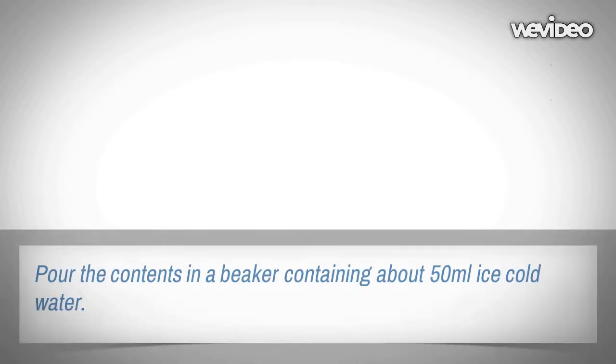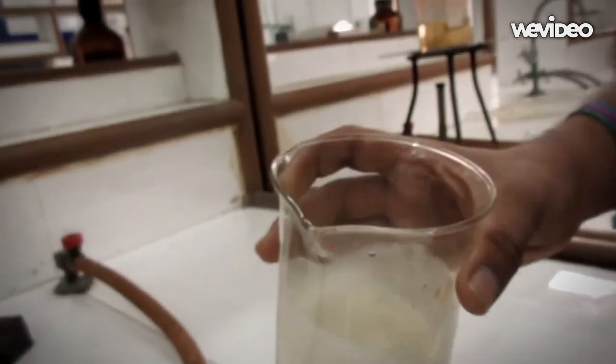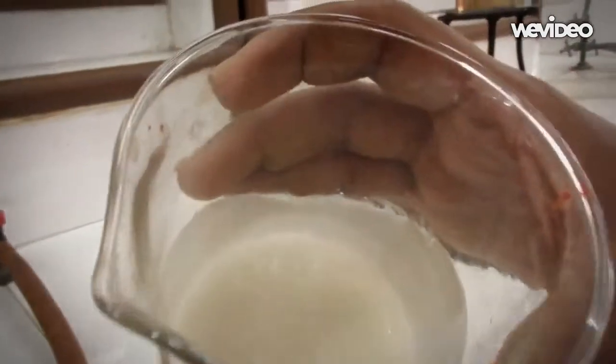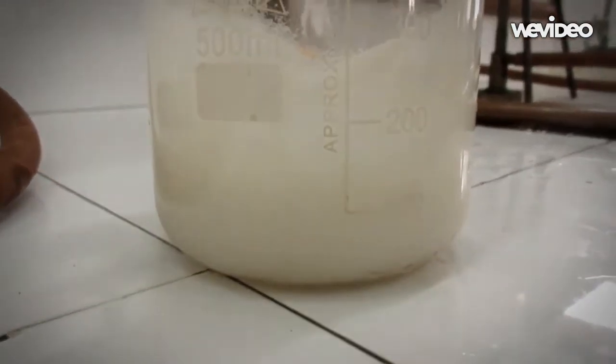Heat this test tube in a water bath for about 20 minutes. After cooling down to room temperature, add the contents in the beaker containing 50 milliliters ice-cold water. Shake it and the precipitate of acetanilide is obtained.